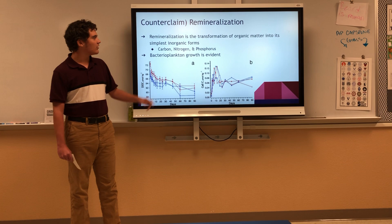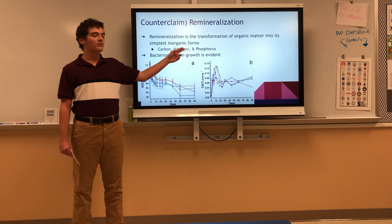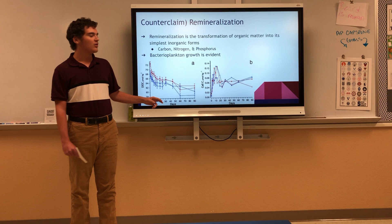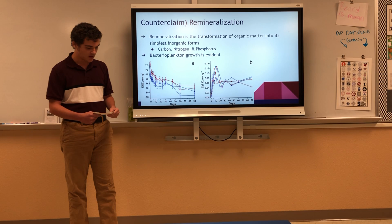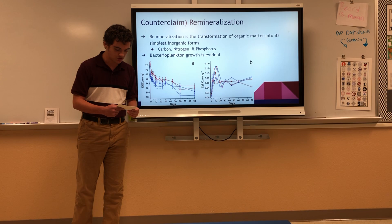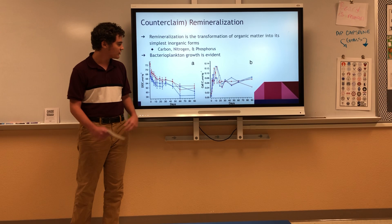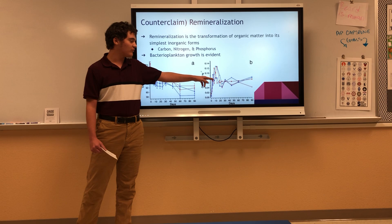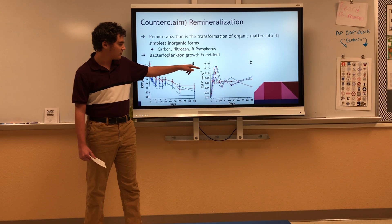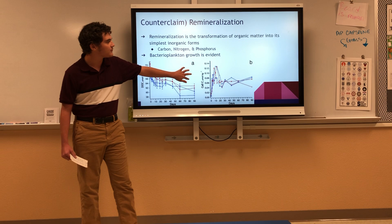For the counterclaim, it's called remineralization — the transformation of organic matter into its simplest inorganic form. Carbon, nitrogen, and phosphorus are usually the main elements used. Bacterioplankton, a smaller part of the phytoplankton group, uses this to grow in these ocean deserts. Using stimulus material from NOAA and 'Dissolved Organic Nitrogen in the Global Surface Ocean: Distribution and Fate' by Robert T. Leicester, the graphs show the consumption and accumulation of DOC within bacterioplankton, and graph B shows growth over time, expanding from 90 days to a 0.14 cell increase.